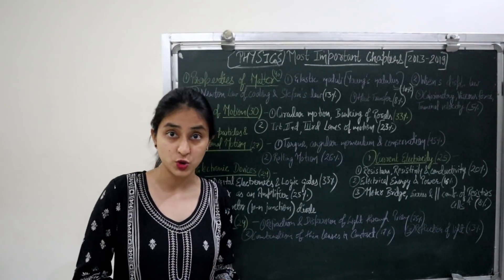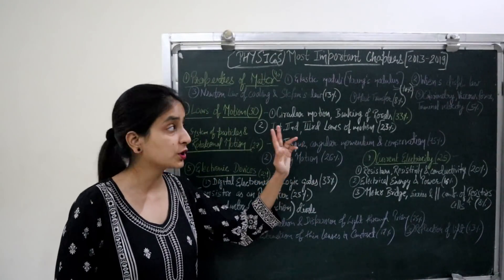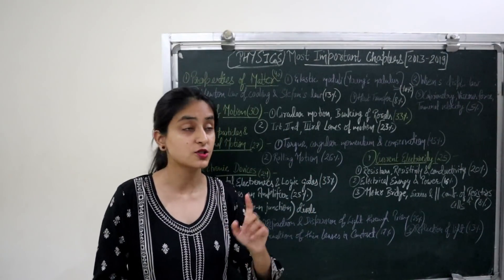The second important chapter is Laws of Motion. In the past 7 years, there are 30 questions here. Most important topics are Circular Motion, Banking of Roads. 33% questions in the past 7 years in this topic.